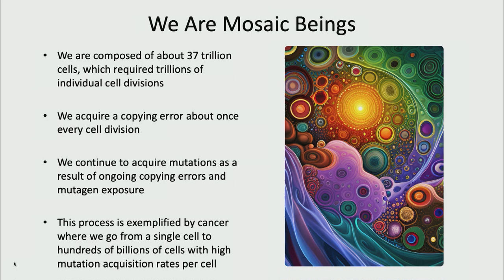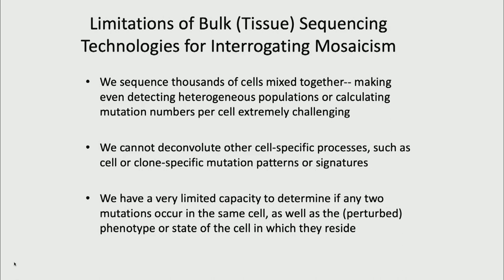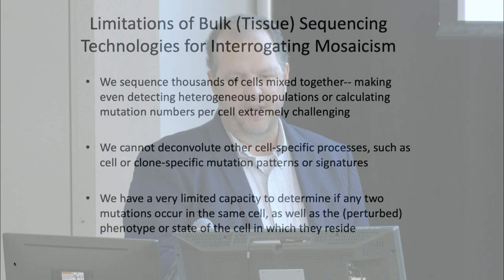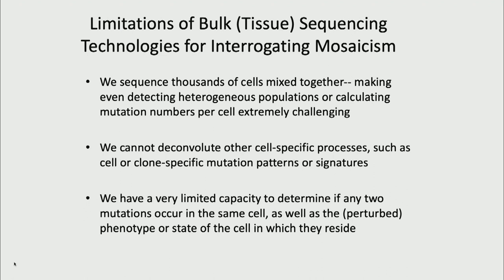To put things into context: we're composed of about 37 trillion cells, which requires trillions of cell divisions. We acquire a copying error that's not repaired about once every cell division, and we continue acquiring mutations as we age from copying errors and mutagen exposure. As an oncologist, I see this exemplified by cancer, where we go from a single cell to hundreds of billions of cells with an impaired ability to repair mutations. Most of what we've learned from sequencing has been at the tissue level using bulk sequencing, but there are limitations for studying intratissue genetic diversity this way.